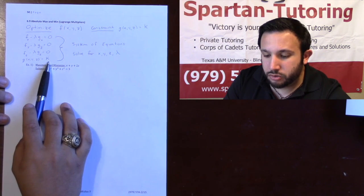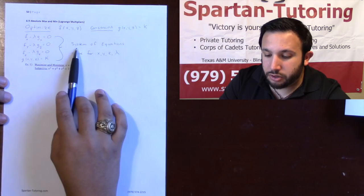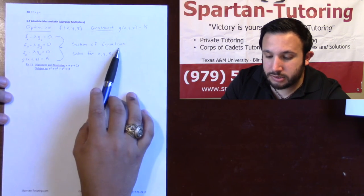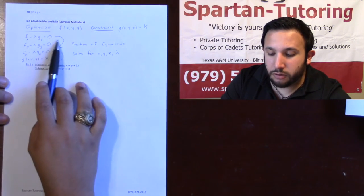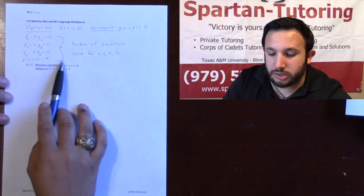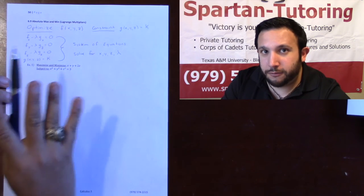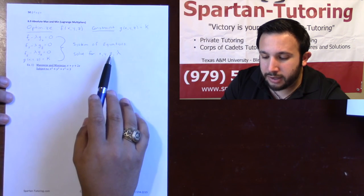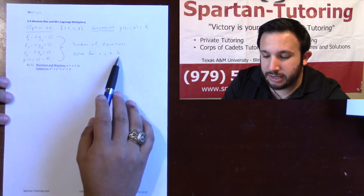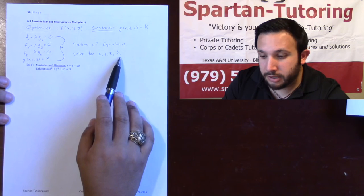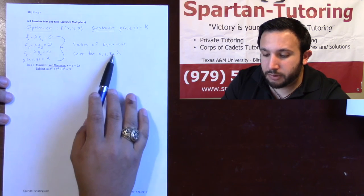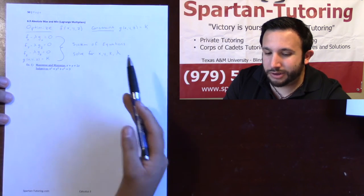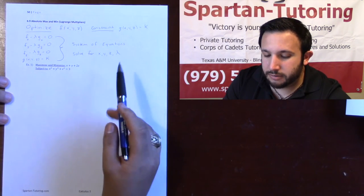Your setup is actually very easy — the calculus is very easy. What's going to be hard about Lagrange is simply the algebra. All you need to do is take the partial derivative of f with respect to x minus lambda times gx, and do the same thing with y and z for however many variables you have, then end by stating the constraint: g of xyz equal to k. You'll have a system of four equations and four unknowns: x, y, z, and lambda — your Lagrange multiplier.